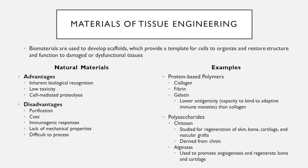Gelatin is a natural polymer derived from collagen and has significantly lower antigenicity — the tendency to react with adaptive immune responses such as through T cells. Silk has received a lot of attention due to its high strength-to-weight ratio and slow degradation. Polysaccharide natural materials include chitosan, derived from chitin, studied for regeneration of skin, bone, vascular grafts, and cartilage; and alginates, used to promote angiogenesis and regenerate bone and cartilage. Unfortunately, natural materials have limitations including their purification, cost, potential for immunogenic responses, and lack of mechanical properties and processability.